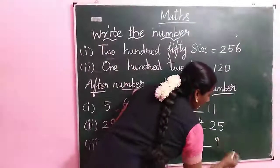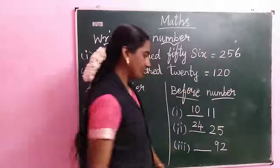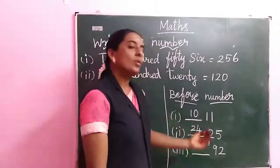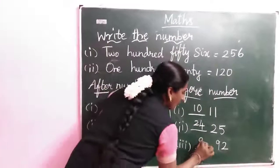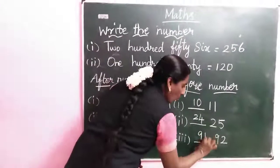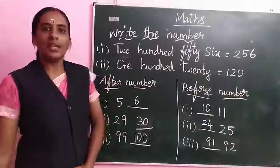Next, 92. What now? Before number. 92, 2 before is 1. 91. Thank you students.